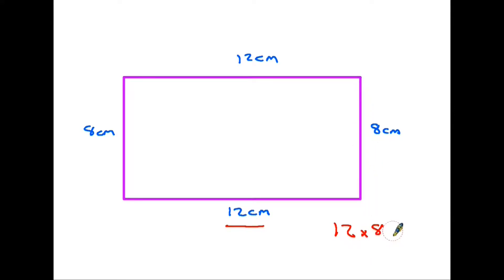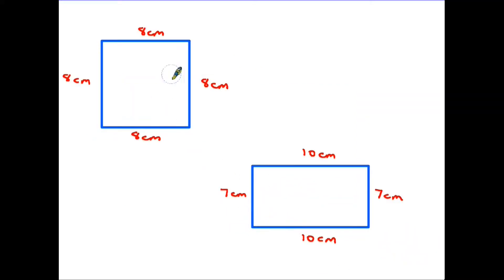Therefore 12 times 8 is 96, so the area is 96 centimeters squared. If I were to draw the lines across and down there would be 12 lines of 8, there would be 96 square centimeters in the shape.